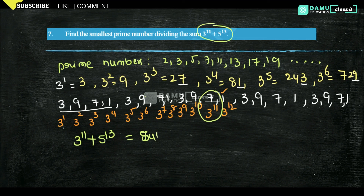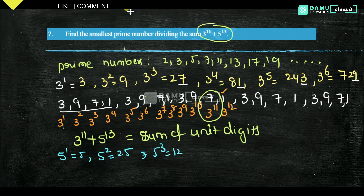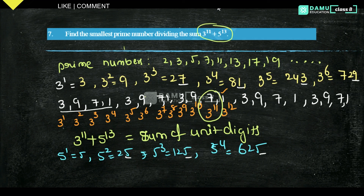Now for 5^13: 5^1 has unit digit 5, 5² is 25, 5³ is 125, 5^4 is 625 — everywhere the unit digit is 5. So for 5^13, the unit digit is also 5. Therefore 3^11 + 5^13 has unit digit sum 7 + 5 = 12.